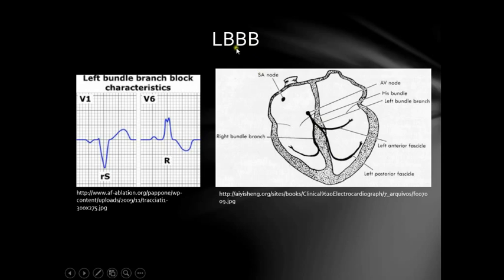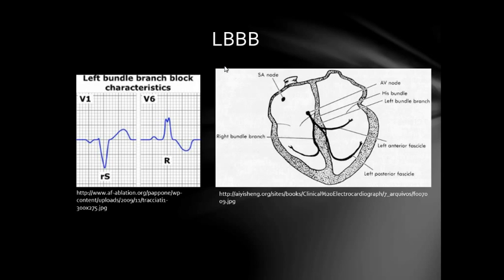In left bundle branch block, the right ventricle is first activated, then the left ventricle. One important point: the R-prime wave, which is the second R, is taller than the first R-wave. It is commonly known as the right rabbit ear for the R-prime, and the left rabbit ear for the first R. The right rabbit ear (R-prime) is taller than the left in left bundle branch blocks — and we'll see in the next videos why that is clinically important.